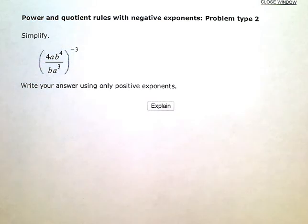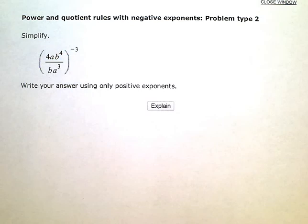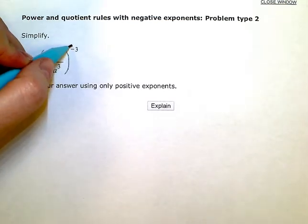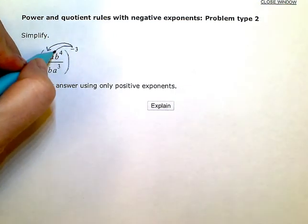So, the first thing I'm going to do is get rid of these parentheses and that exponent on the outside, and the power to a power rule says that I can take this exponent and think, kind of like the distributive property.